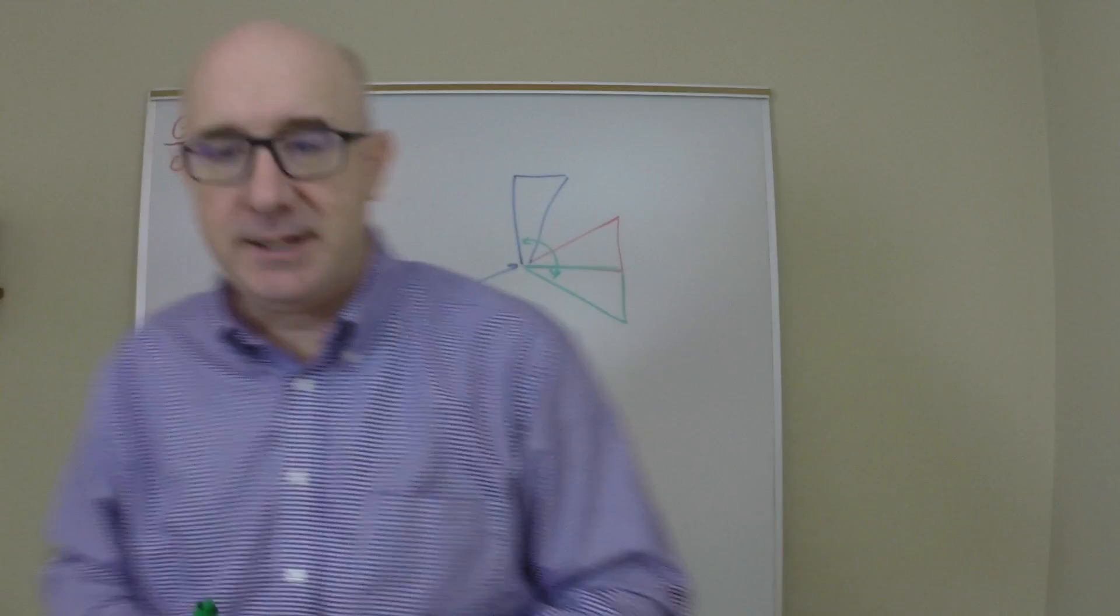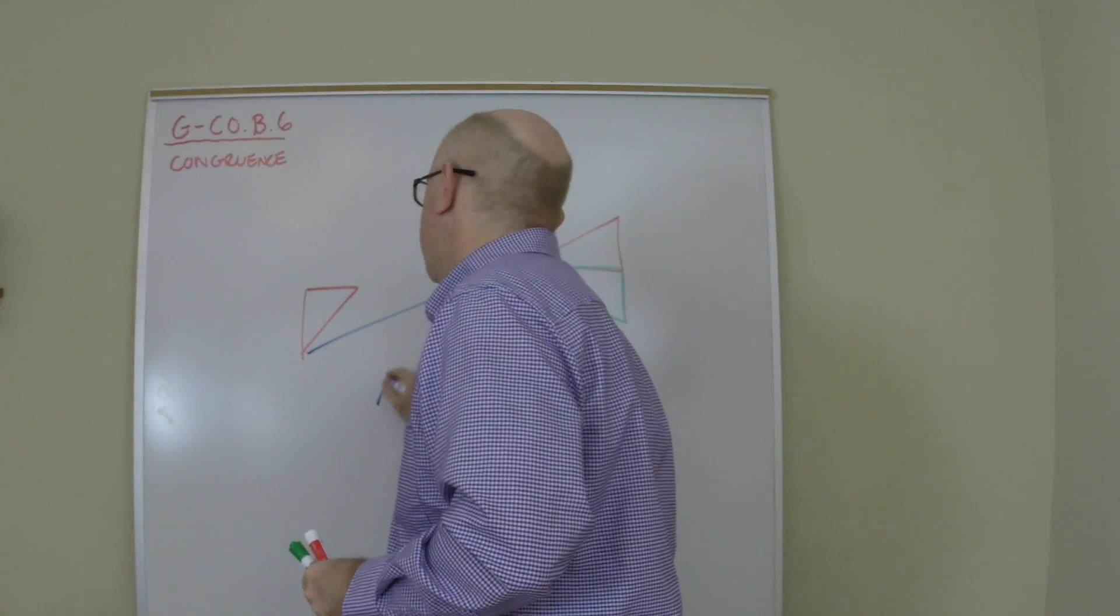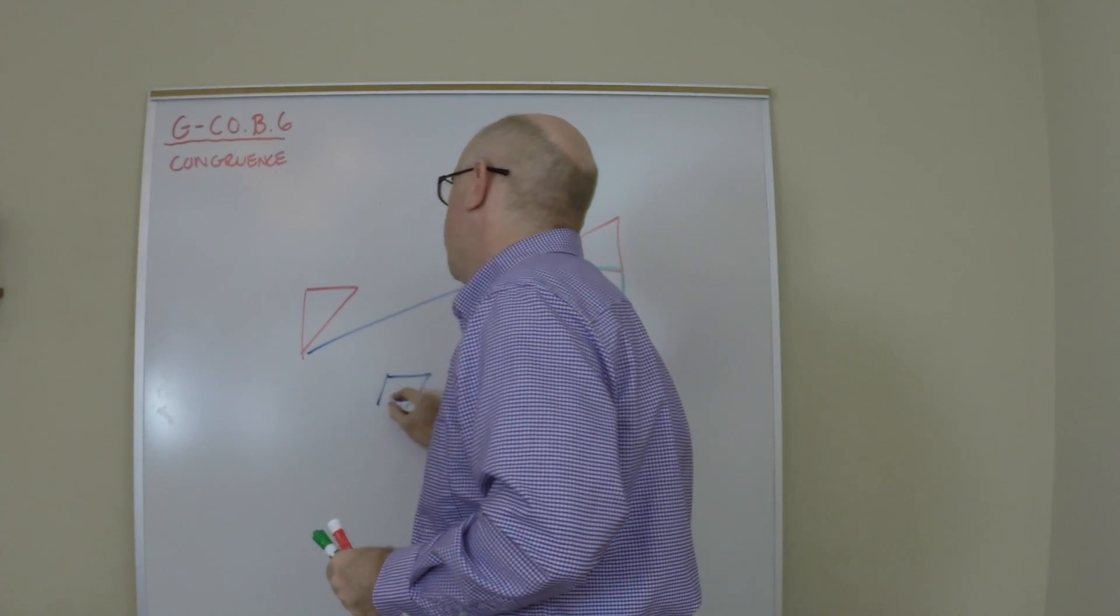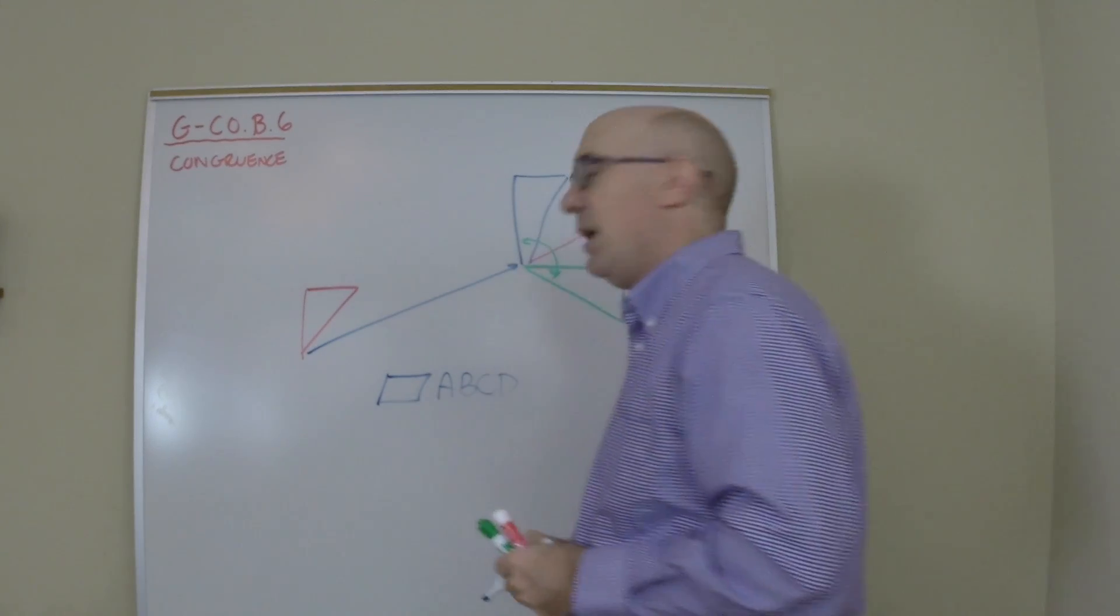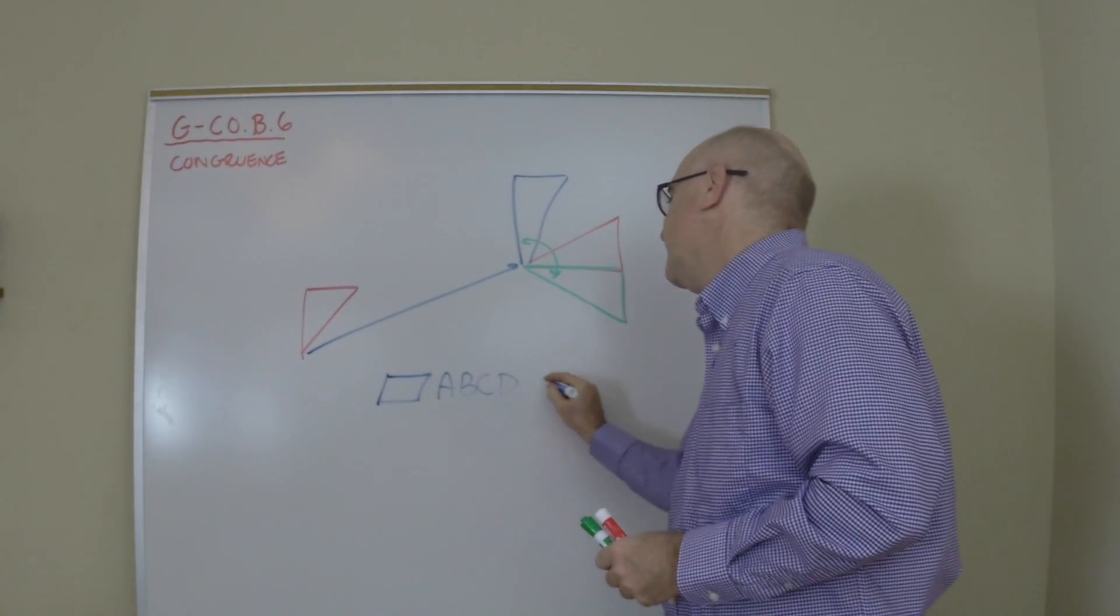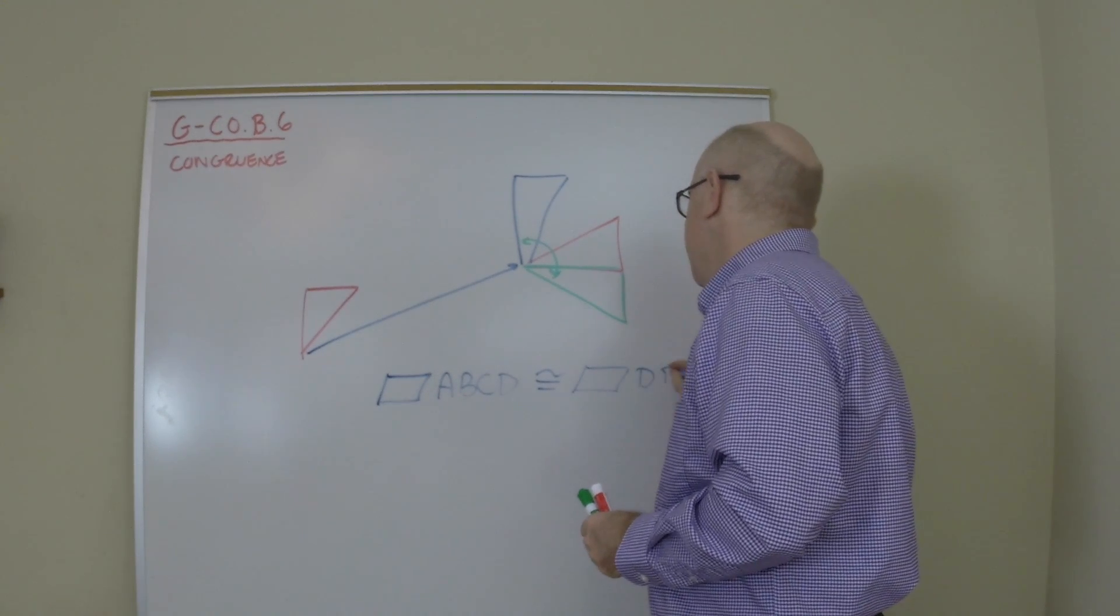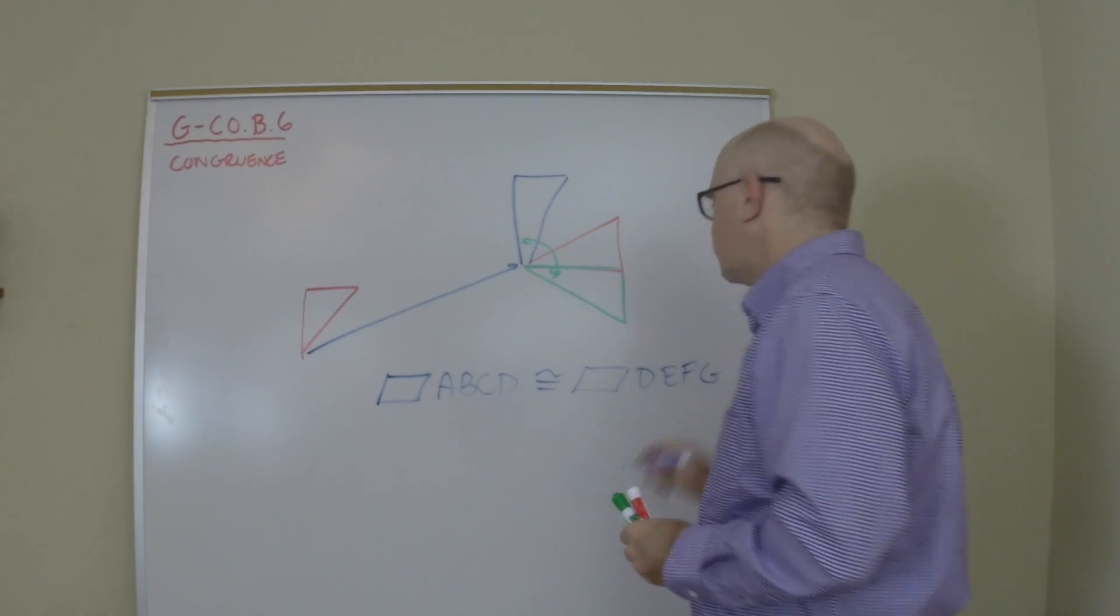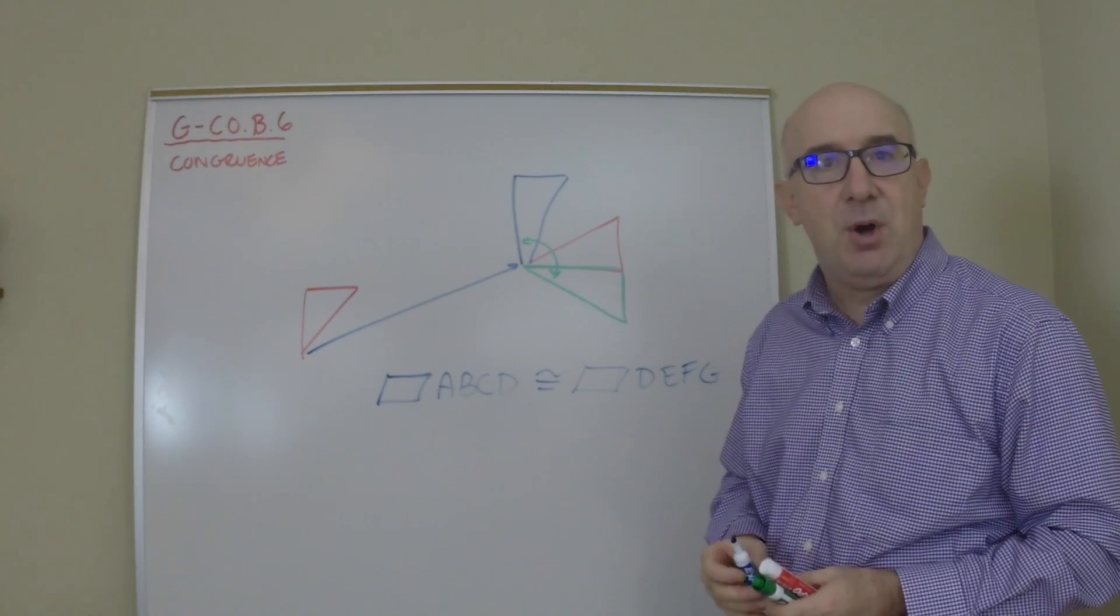The last thing I'd say is how a congruent statement works. If I say quadrilateral or parallelogram ABCD is congruent to parallelogram DEFG. This is stating a lot of information in a very small line.